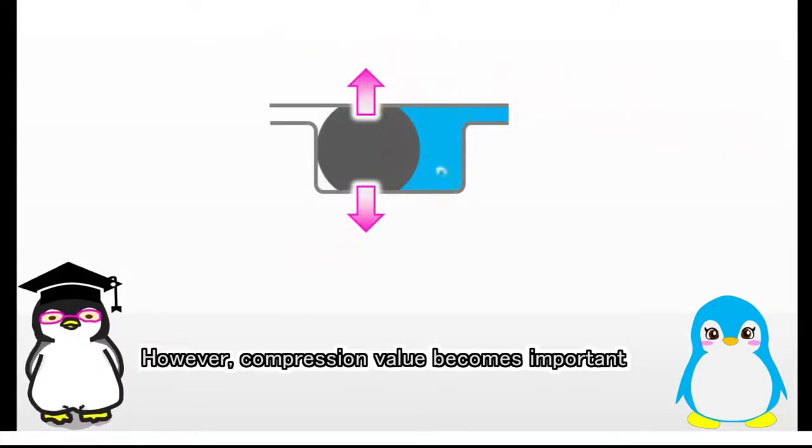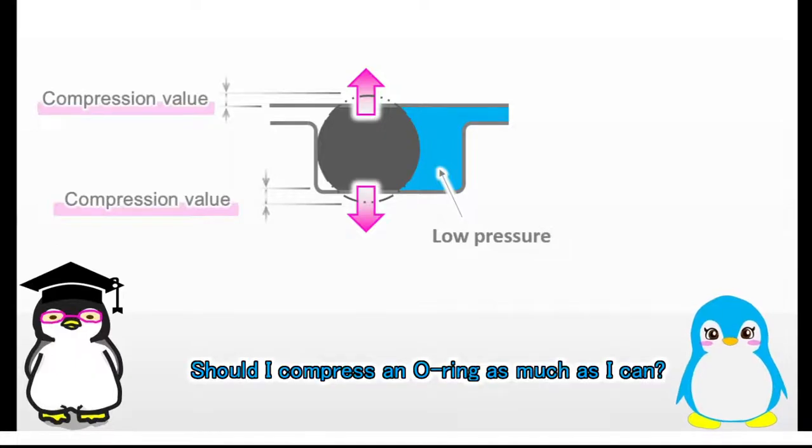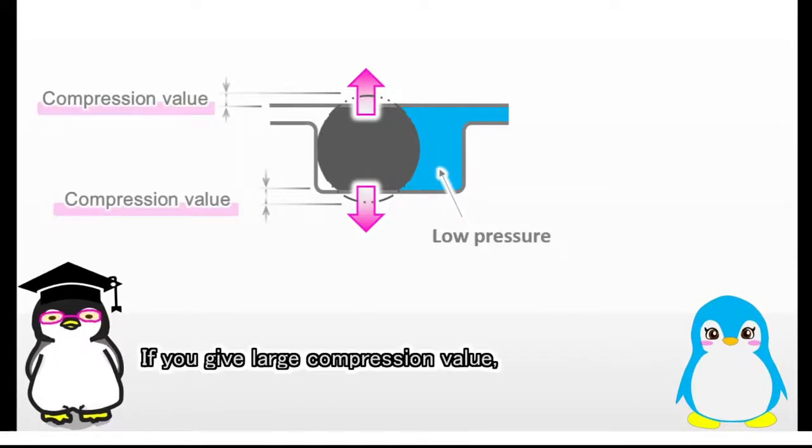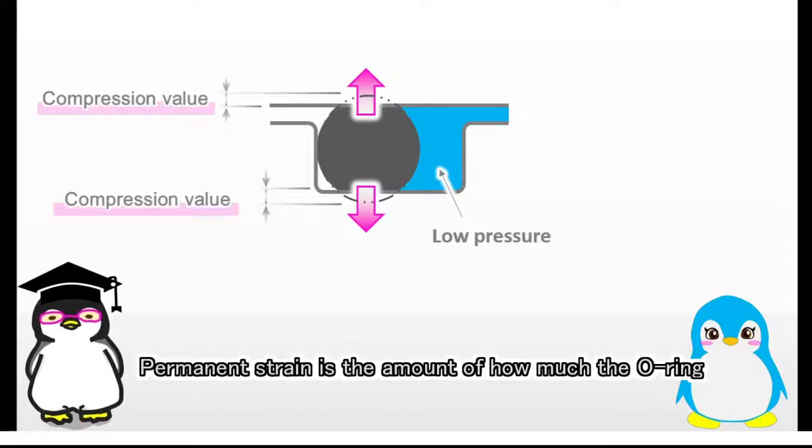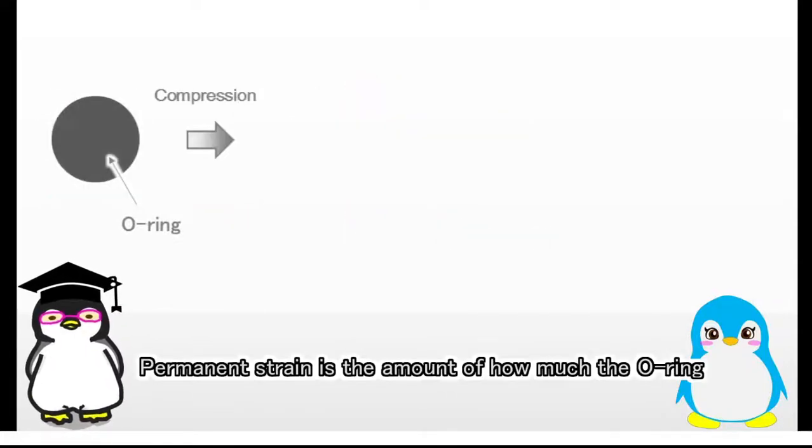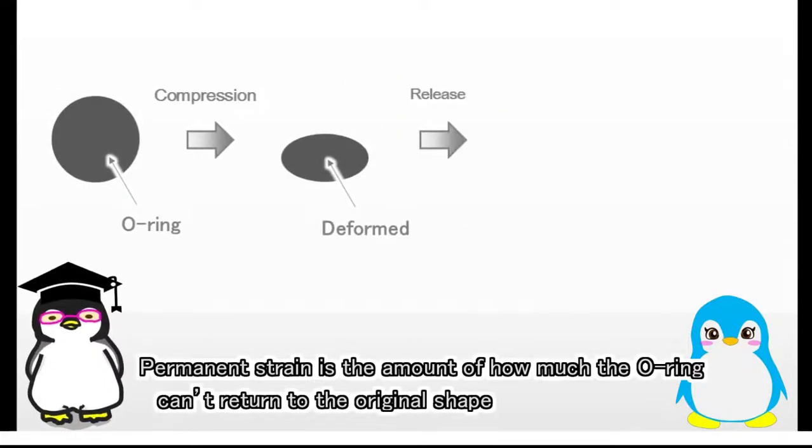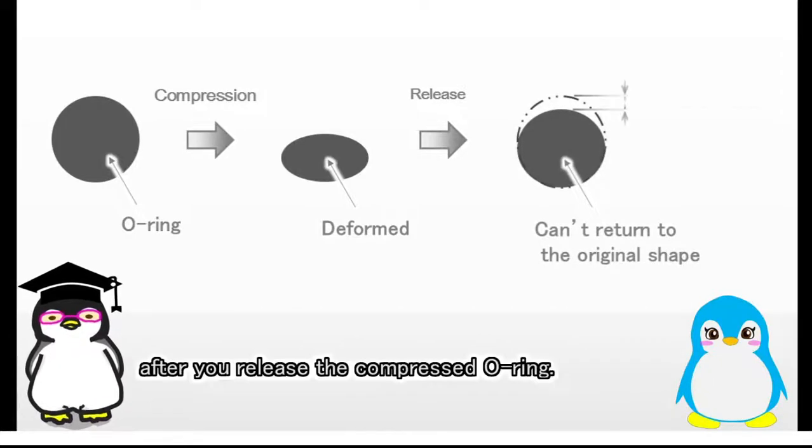However, compression value becomes important when the pressure is low. Should I compress an O-ring as much as I can? If you give large compression value, you need to be careful of permanent strain. Permanent strain is the amount of how much the O-ring cannot return to the original shape after you release the compressed O-ring.